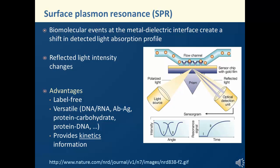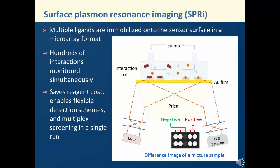SPRI can also provide kinetics data that can be directly used in characterizing a particular biochemical reaction. Traditionally, SPRI has only one to four fluid channels for analysis of a very limited number of samples at a time. The SPRI imaging technology takes SPRI analysis a step further. It allows the entire sensor surface to be visualized through a video CCD camera so that multiple ligands can be immobilized onto the sensor surface in a microarray format, and hundreds of interactions can be monitored at the same time. This can reduce reagent use significantly and shorten overall analysis time by allowing multiplex screening in a single run.